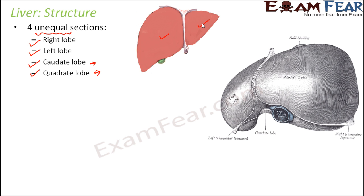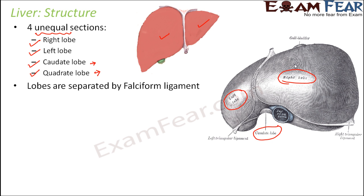If you observe closely, you can see the right lobe and the left lobe, and the sizes are all unequal. The quadrate lobe is somewhere towards the posterior side and is not visible from the front — it is towards the back side. The lobes are separated by the falciform ligament, so between the right and the left lobe there is a layer of ligament — that is the falciform ligament.